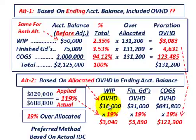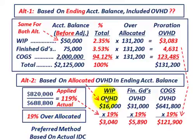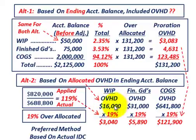We know what overhead is sitting in each one of those accounts. For the proration in alternative two, what we applied was $820,000 based on our budgeted amounts, but our actual amount is $688,800. Making the division, what we applied is 119% of our actual — so the difference means we're 19% over-allocated. We want to take whatever overhead is sitting in each account times 19%, and that will be our proration amount to remove.